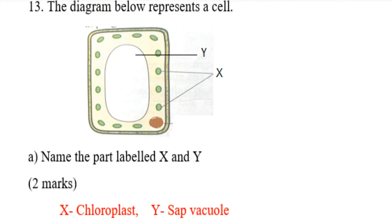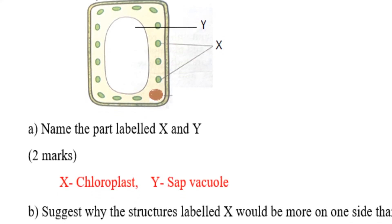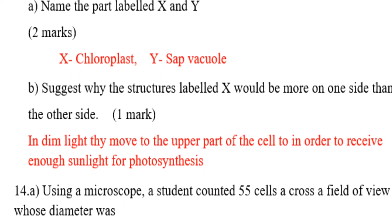Question number 13: The diagram below represents a cell. By the way it appears, it is like a plant cell, because the plant cell has the nucleus on the side, while the animal cell has the nucleus at the center. You are told to name the part labelled X and Y. X is cytoplasm, and Y is the vacuole.